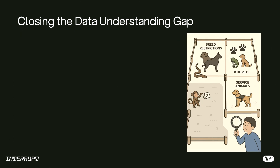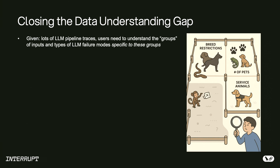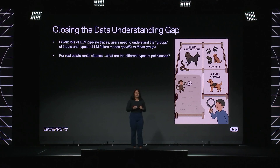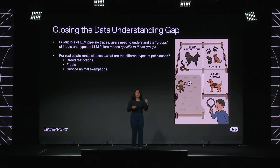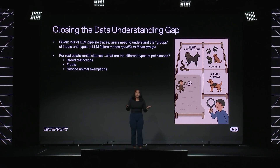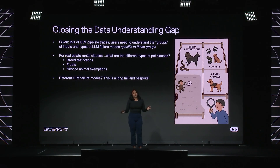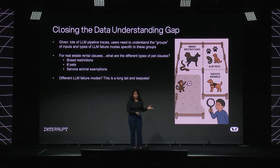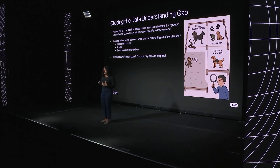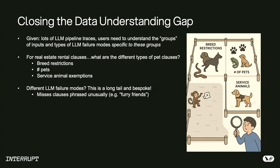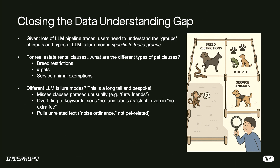The data understanding gap: in our real estate rental contract example, the core challenge is understanding what types of documents exist in the data and what unique failure modes occur for each type. All sorts of pet clause types might exist — breed restriction clauses, limits on the number of pets, service animal exemptions — and many people don't know this until they look at the data. We see a really long tail of failure modes, not unique to real estate. Clauses might be phrased unusually and the LLM misses them; LLMs might overfit to certain keywords or extract unrelated things. It's not uncommon to see people flag hundreds of issues in a thousand-document collection.